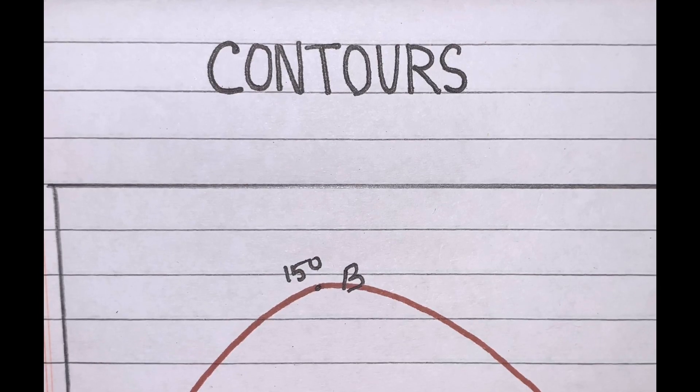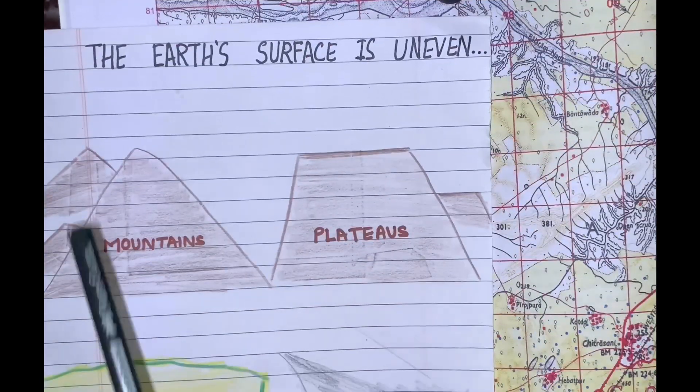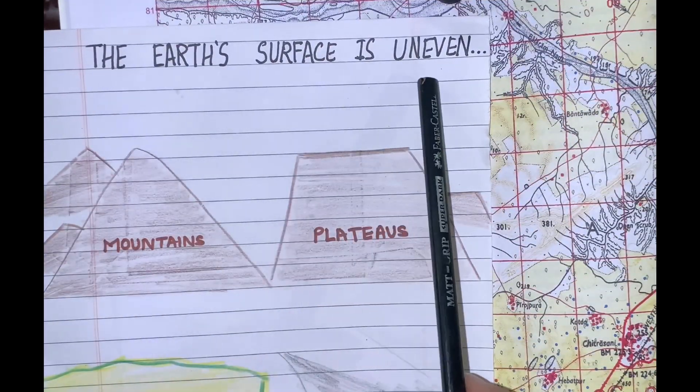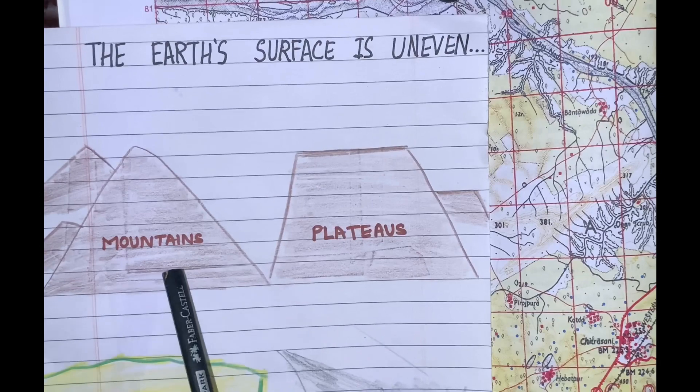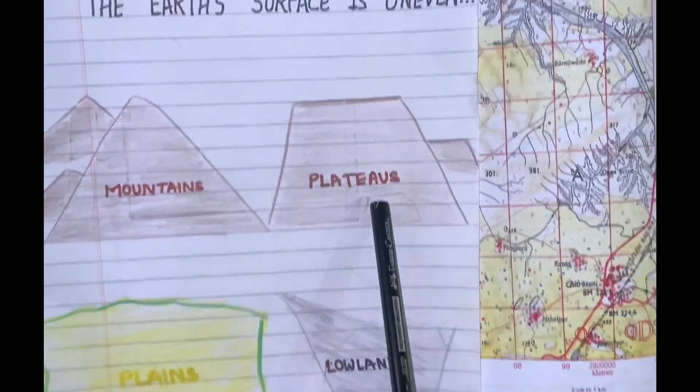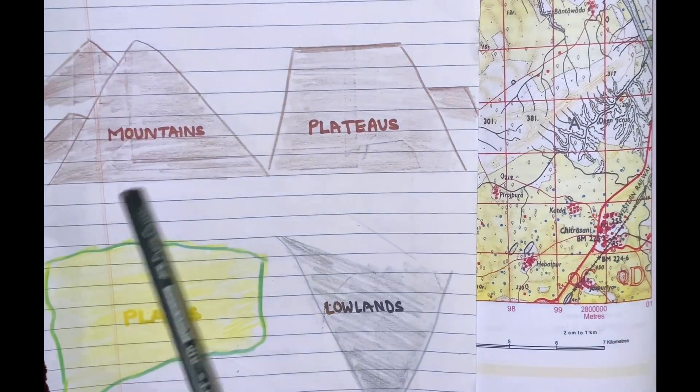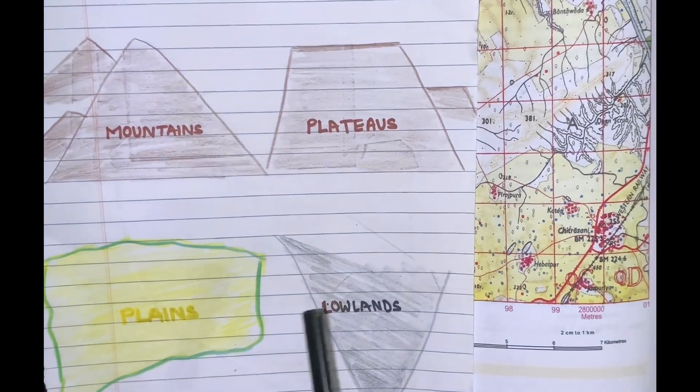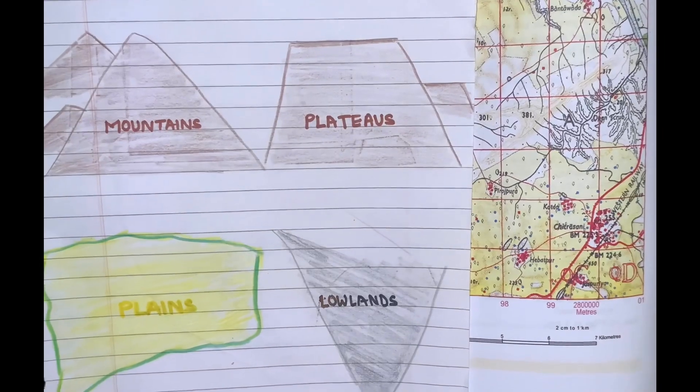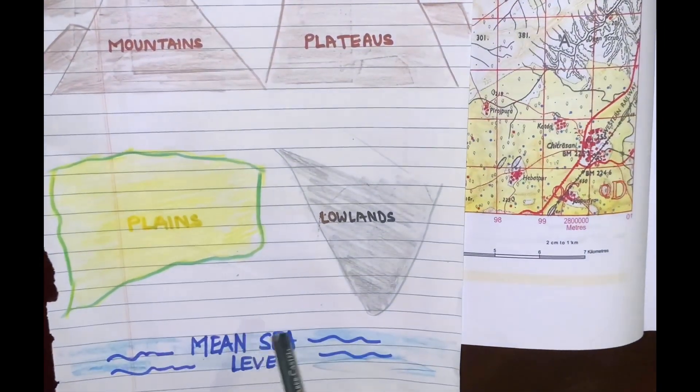Hello all of you. Today's topic is contours. The earth's surface is uneven. It is made up of mountains, plateaus, plains and lowlands. All these relief features have different elevations, different heights from the mean sea level.